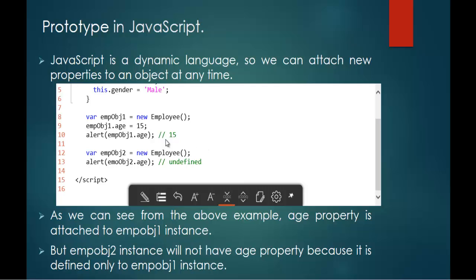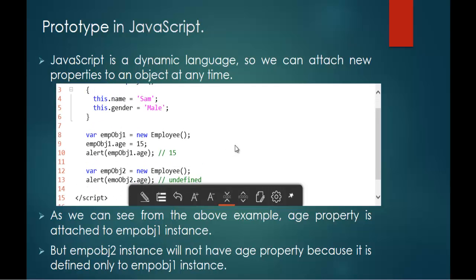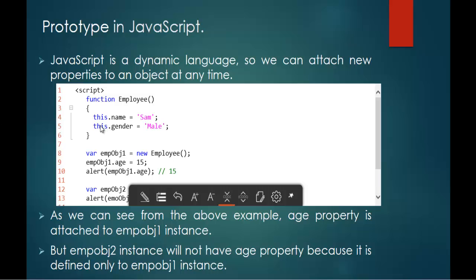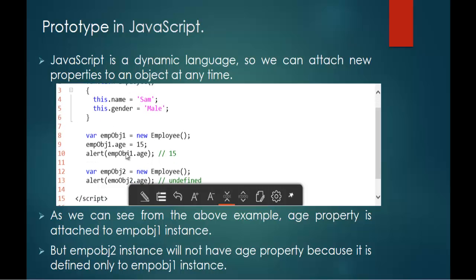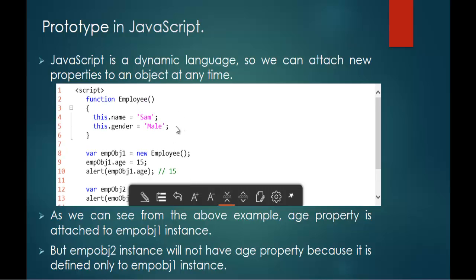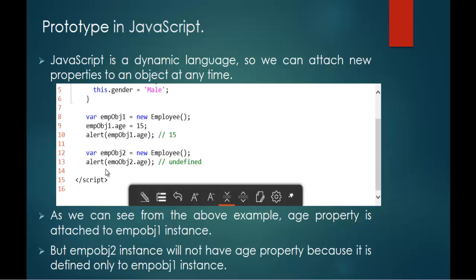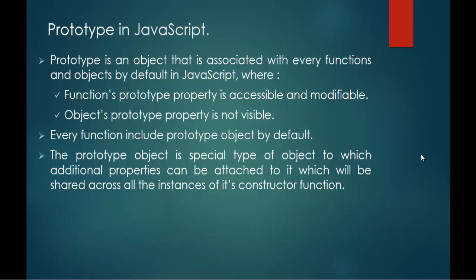Suppose if you want the age property attached to the function itself, such that all objects created of this function employee will have the age property — what we need to do is go back to the function and add 'this.age = 15'. But I don't want to do it that way. At any point of time in my 14th line, if I need to add a new property, I can achieve that with the concept of prototype in JavaScript. Let us jump into the next slide.